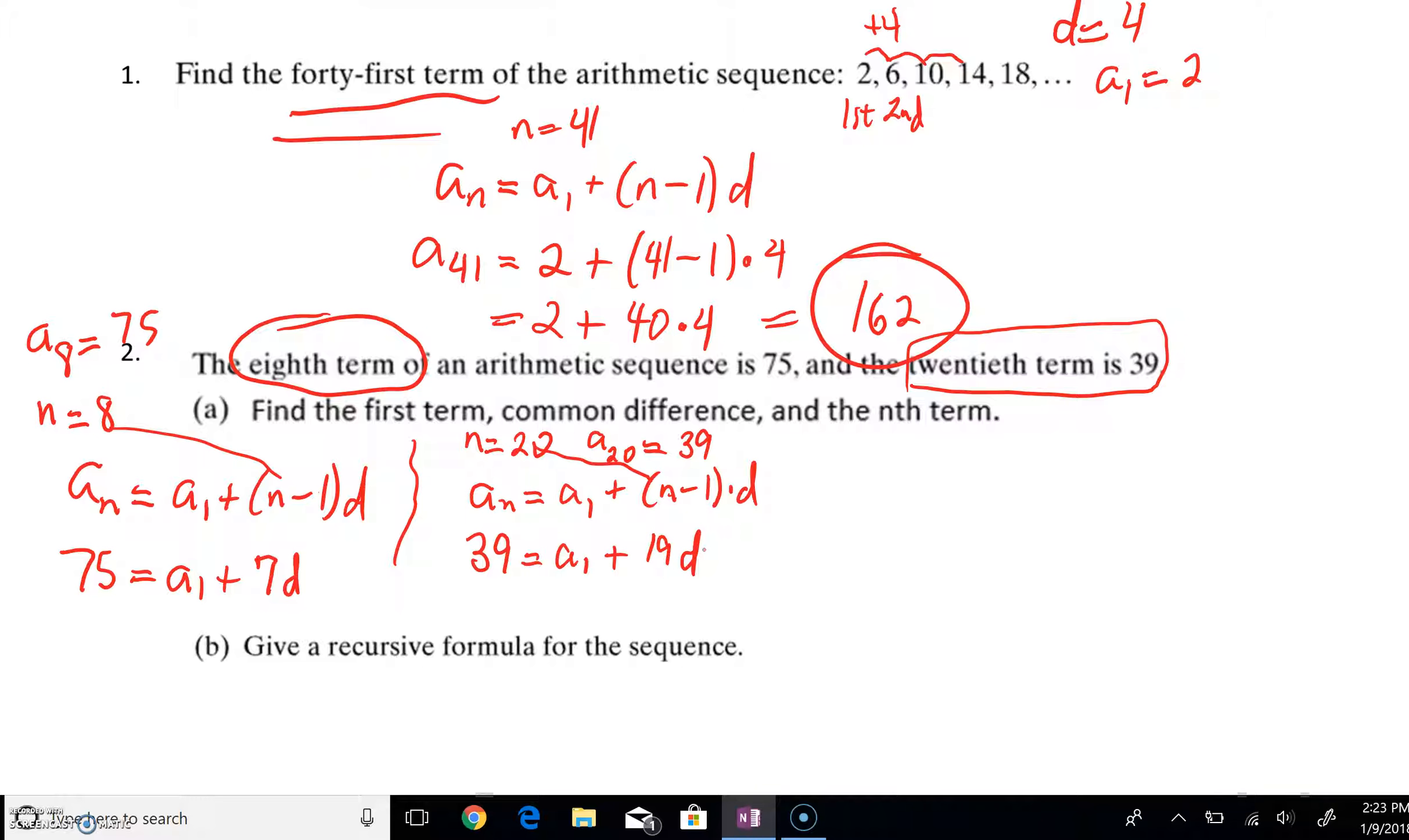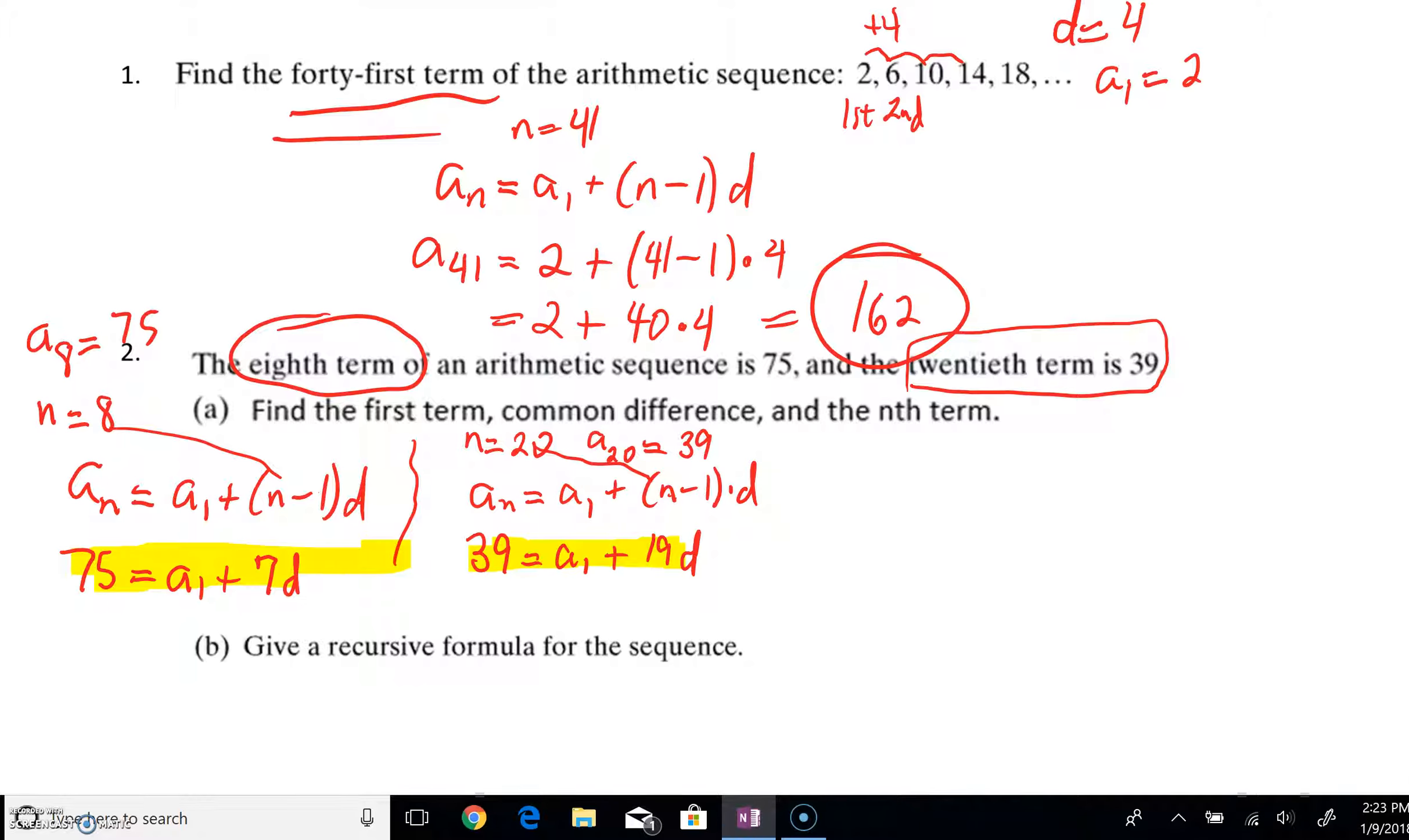Here's the neat part. At this point, we now have a system of equations. We have this equation right here, the 75 equals a sub 1 plus 7d. We also have this 39 equals a sub 1 plus 19d. Now, what we can do is either use elimination or substitution. I'm going to opt for elimination because I think we can do this very fast. I'm going to re-copy that second equation. But the first equation that I'm working with, I'm going to multiply that by negative 1.